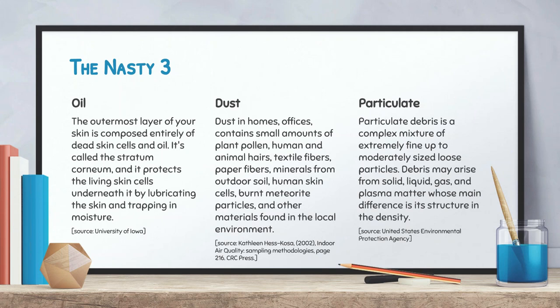Our outer layer of skin is comprised entirely of dead cells and oil — called the stratum corneum. It protects the living tissue underneath, lubricates it, and traps moisture to keep us from drying out. Oil is a good thing, but it causes challenges: if you've ever touched your smartphone screen, you can see how quickly that oil transfers onto the glass.